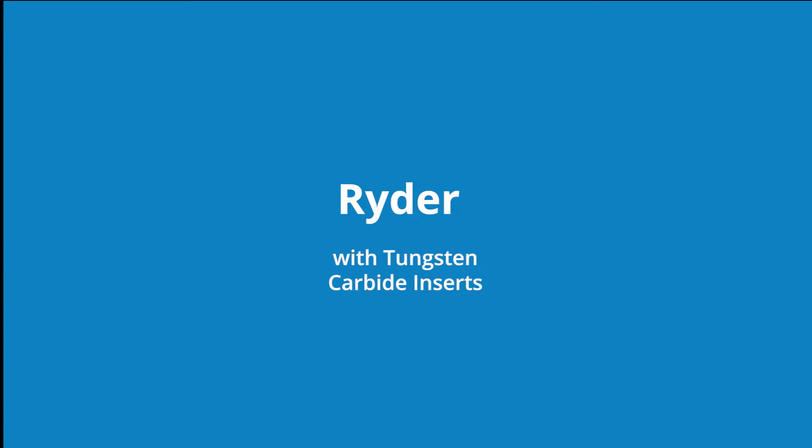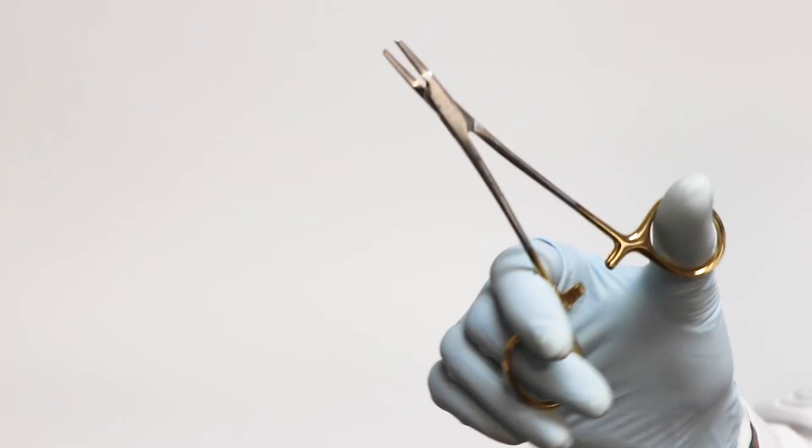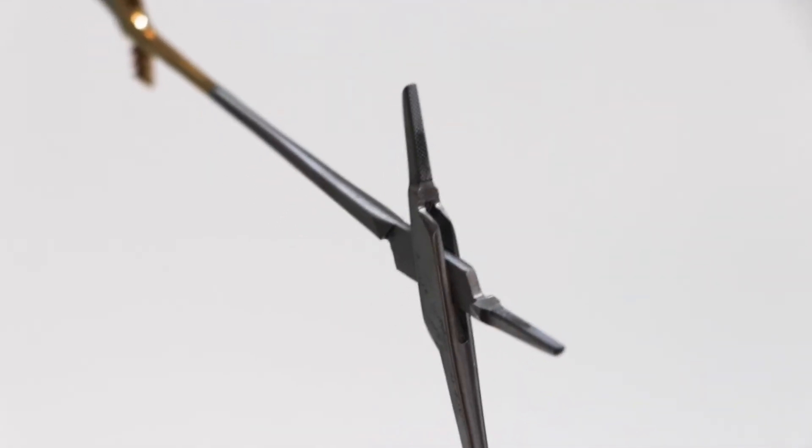Ryder needle holders have delicate tips, and they are used to hold small suture needles. The tips have a cross serrated pattern and tungsten carbide inserts.